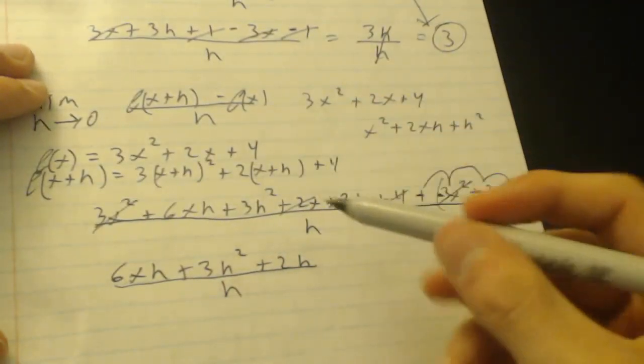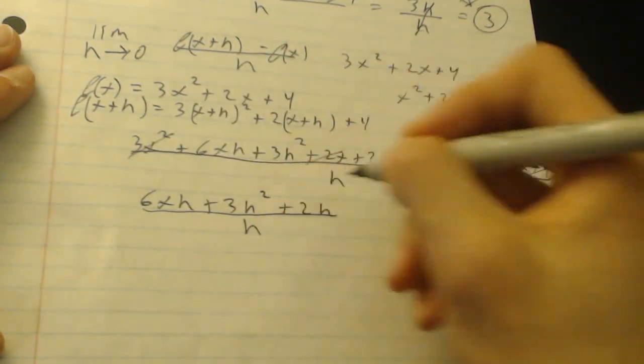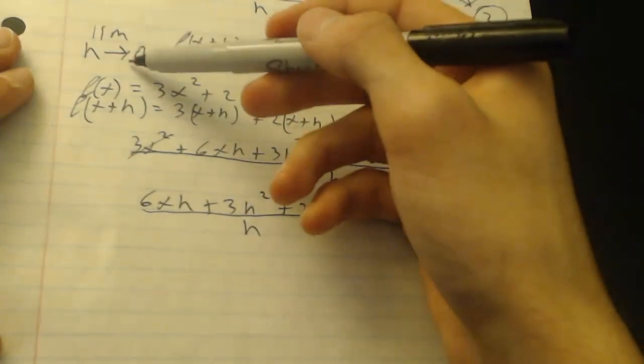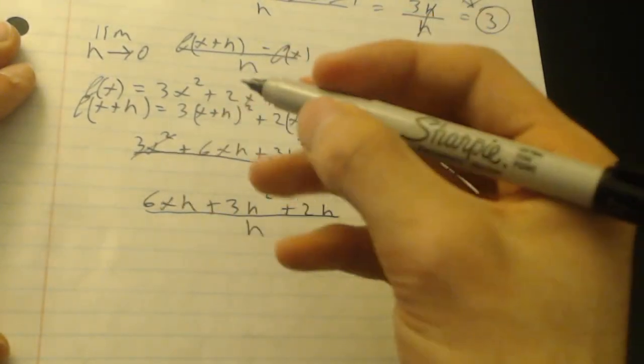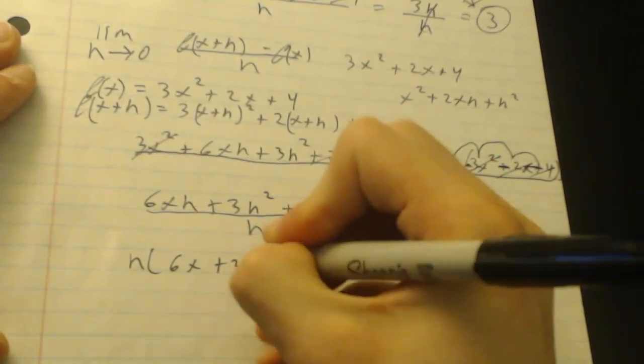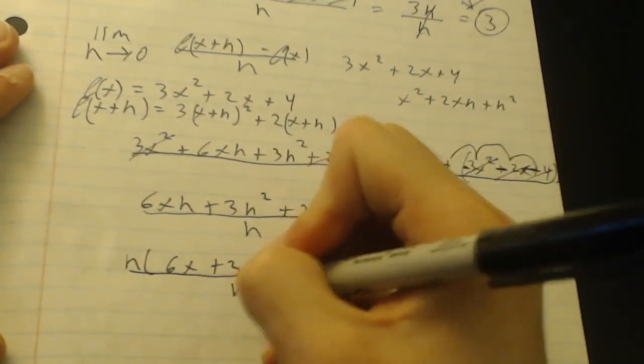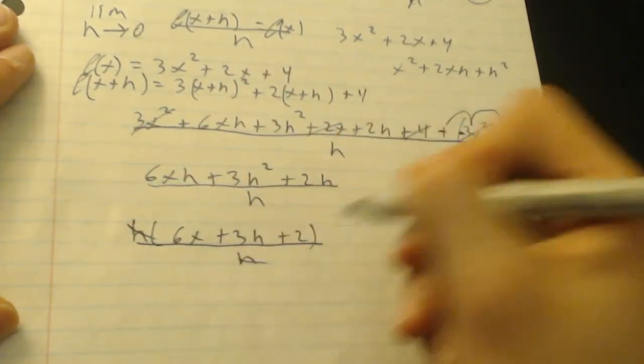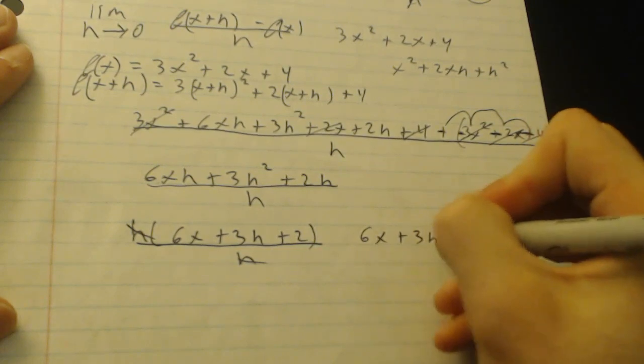Now what we have to do now is distribute out the h's on the top, so we can cancel out this bottom h, because you can't have anything over 0. Because at this point we'll actually have to plug in h equals 0 into this limit. So we'll be left with h times 6x plus 3h plus 2 all over h. Now this is where the h's cancel.